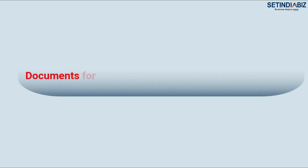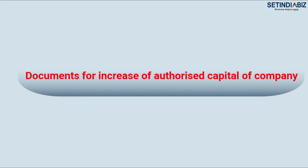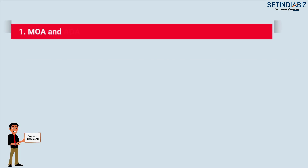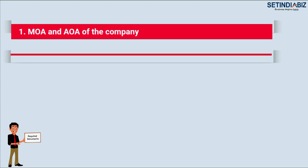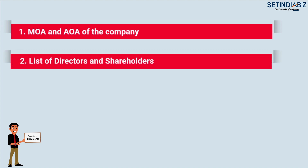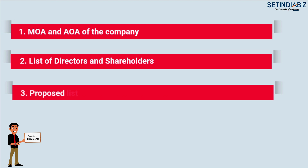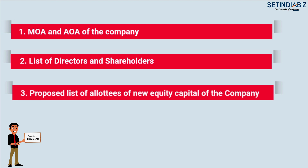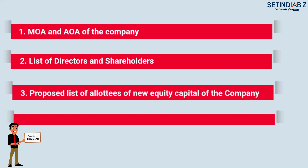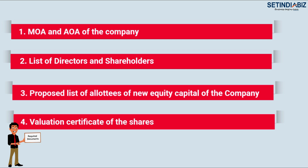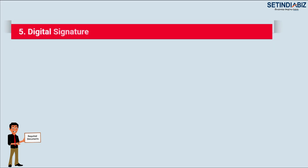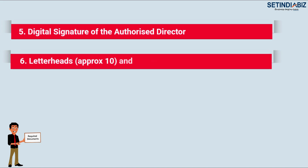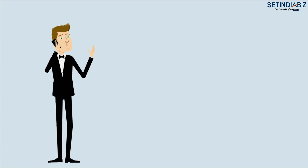Documents required for allotment of fresh equity shares of the company: 1. MOA and AOA of the company; 2. List of directors and shareholders; 3. Proposed list of allottees of new equity capital of the company; 4. Valuation certificate of the shares; 5. Digital signature of the authorized director; 6. Letterhead, company stamp, and rubber stamp of director.